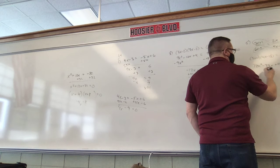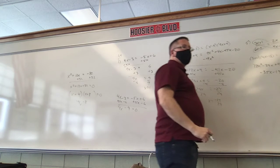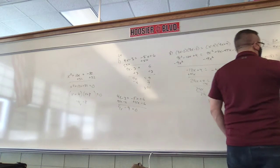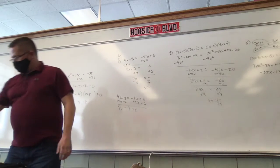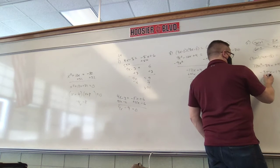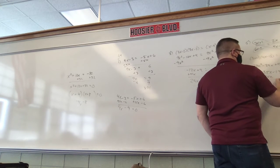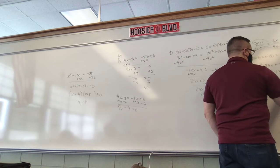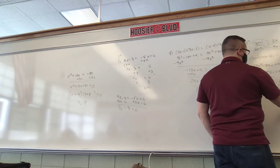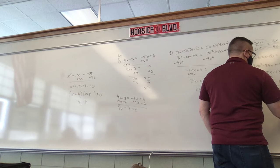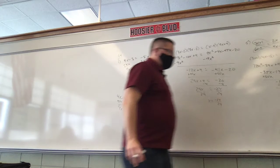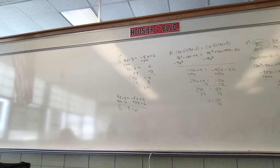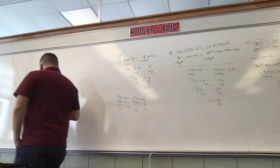So we do that and combine like terms. We have negative 35x minus 13 equals 26x minus 10. Add 35x to each side: negative 13 equals 61x minus 10. Add 10 to each side: negative 3 equals 61x. Divide by 61, x is negative 3 over 61.